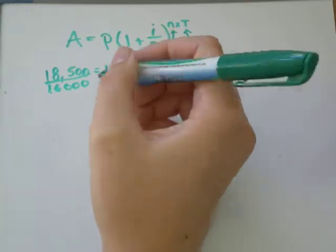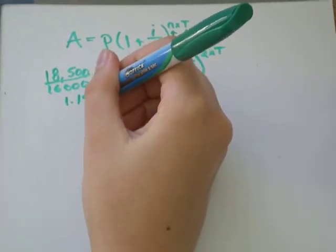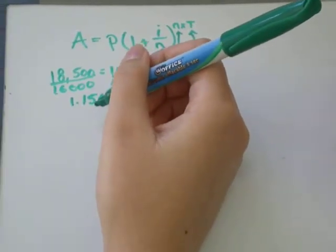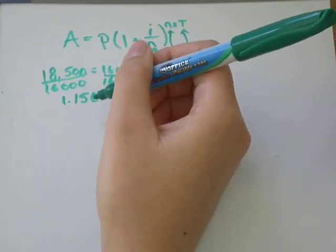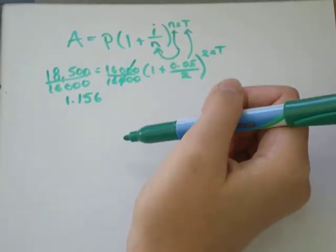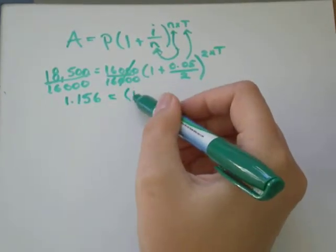18,000 divided by 16,000, I get approximately equal to 1.156. Just keep 3 or 4 numbers after the decimal so that your rounding error isn't too large. 16,000 divided by 16,000, well that's just 1. And then nothing over here has changed.